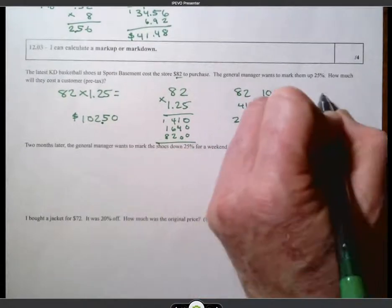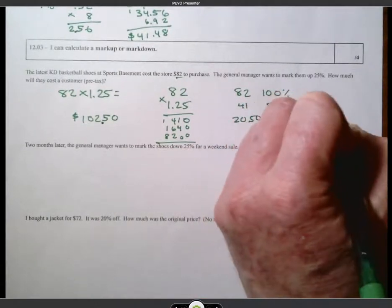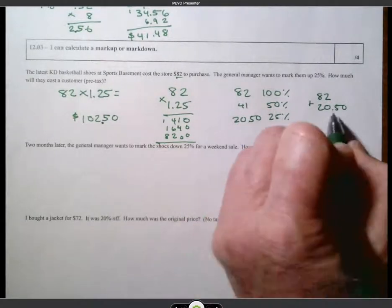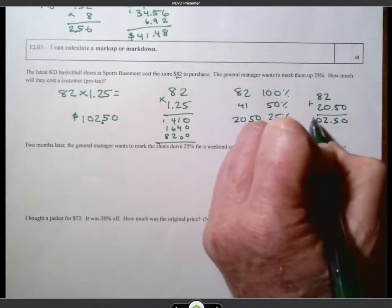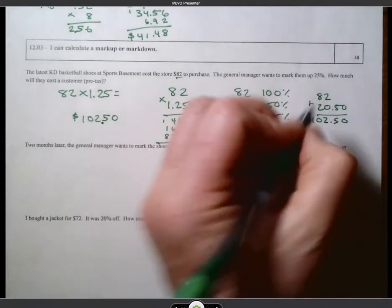And that would have been the markup. So I could have just taken $82 and added $20.50. Right? The markup. And got 102.50. Okay? Just a different way of doing it.